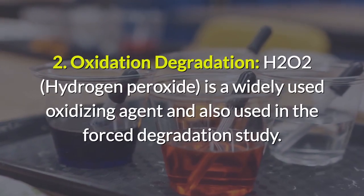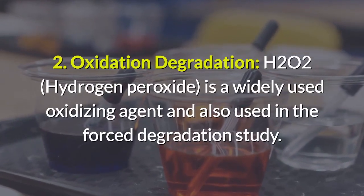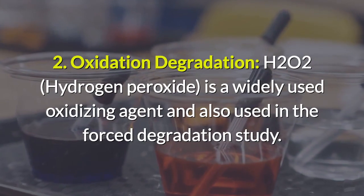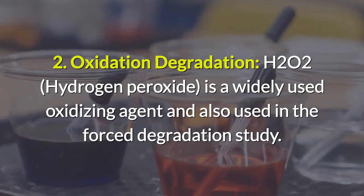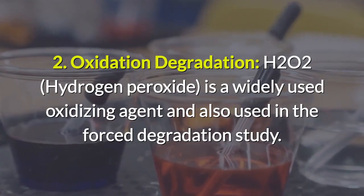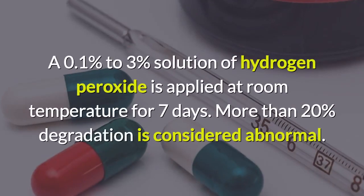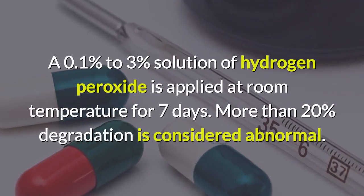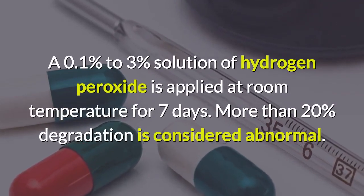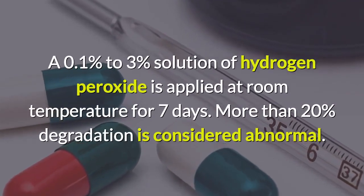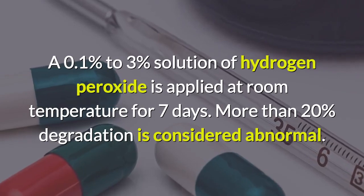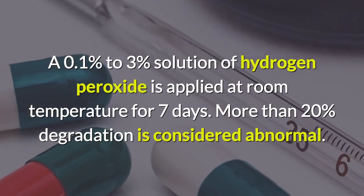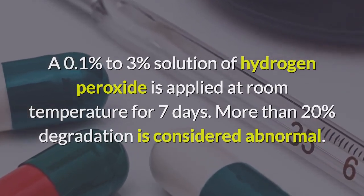Oxidation degradation: H2O2 is a widely used oxidizing agent and is also used in forced degradation studies. A 0.1% to 3% solution of hydrogen peroxide is applied at room temperature for seven days. More than 20% degradation is considered abnormal.